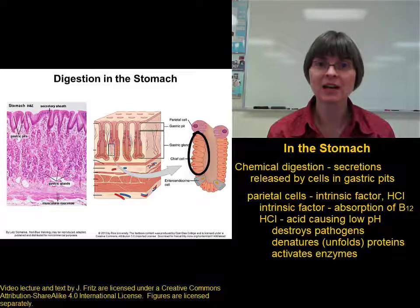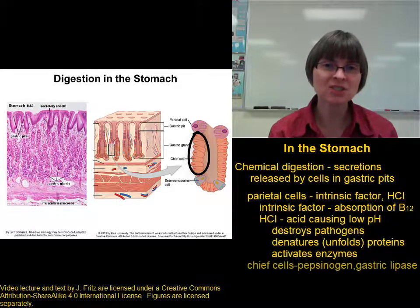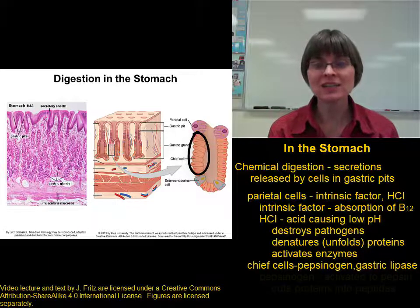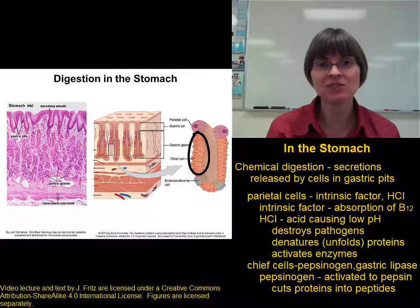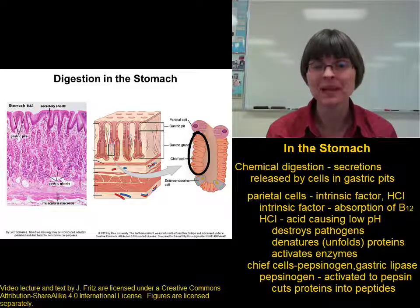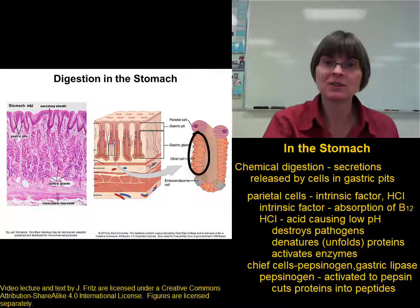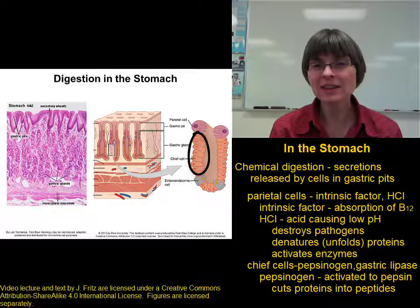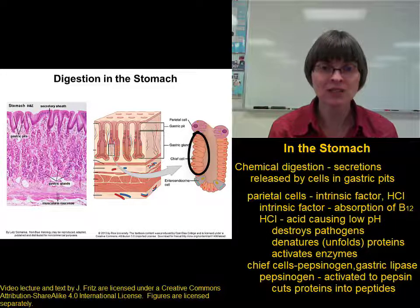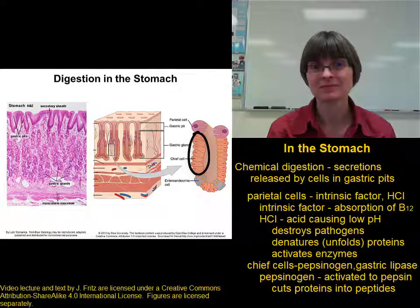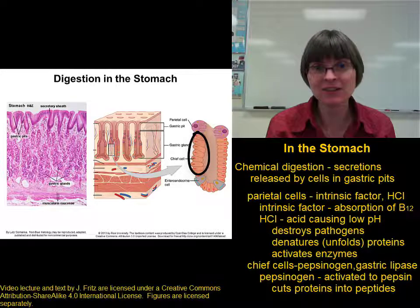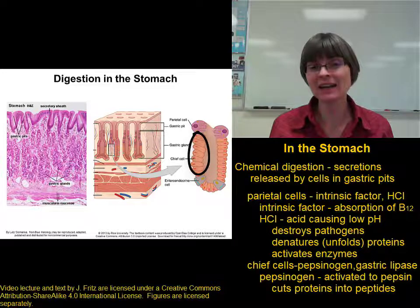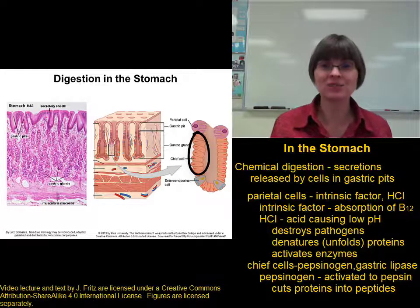The chief cells are a different type of cell found in the gastric pits. Chief cells secrete pepsinogen and gastric lipase. Pepsinogen is an inactive form of an enzyme made in the chief cells and released into the stomach lumen, where hydrochloric acid cleaves it into the active form called pepsin. Pepsin takes long polypeptides and chops them into smaller peptides. Why make pepsin in an inactive form? If pepsin were made active inside the chief cells, it would break down the proteins within those cells and destroy them. So cells make the inactive form, and only once it's in the stomach lumen is it activated to break down proteins.